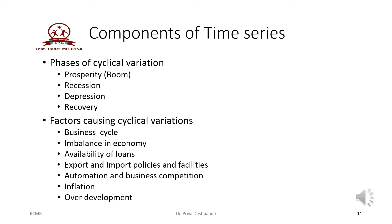Factors causing cyclical variations are generally business cycles, imbalance in the economy, availability of loans, export and import policies of a country, automation and business competition, technological changes in the business world, inflation, and over-development of the business.